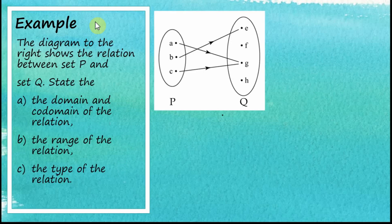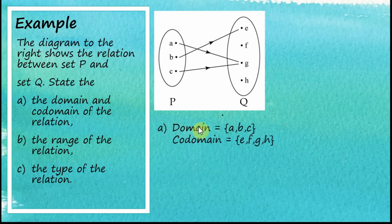Another example. The diagram shows the relation between set P and set Q. State the domain and codomain of the relation. All the elements in the first set form the domain, so the domain is A, B, C. And all the elements in the second set form the codomain, so the codomain is E, F, G, H.